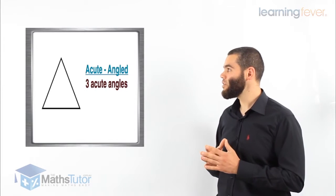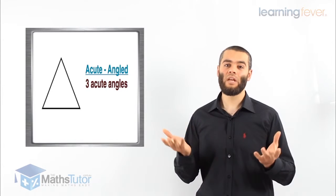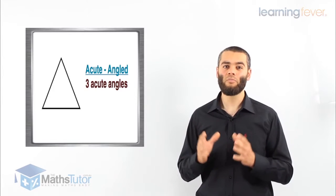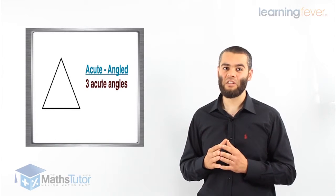Then we have the acute angle triangle. All three angles in this triangle are acute, meaning less than 90 degrees each.